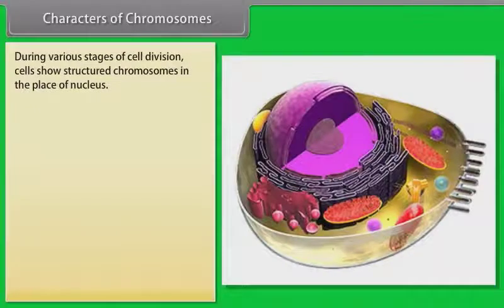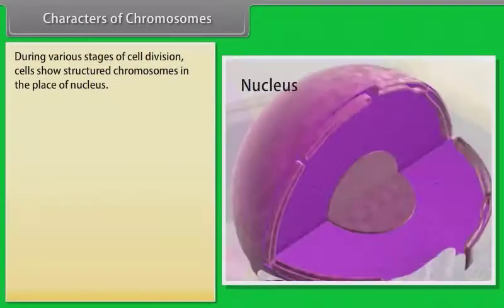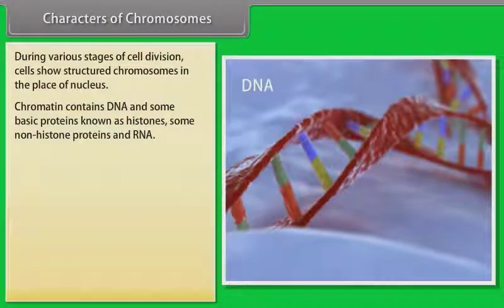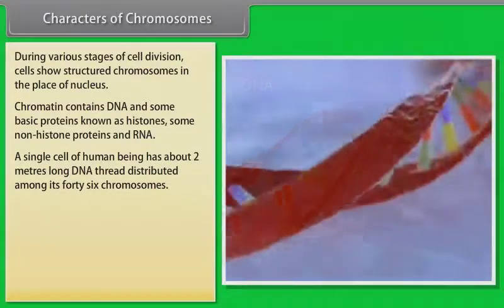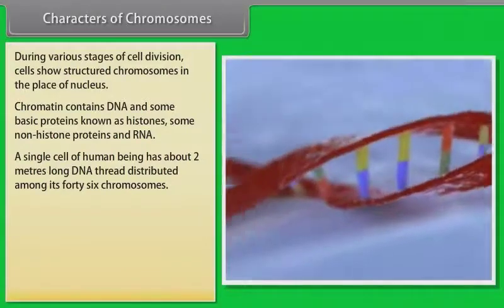Characters of chromosomes. During various stages of cell division, cells show structured chromosomes in place of chromatin. Chromatin contains DNA and some basic proteins known as histones, some non-histone proteins, and RNA. A single cell of a human being has about two meters of DNA thread distributed among its 46 chromosomes.